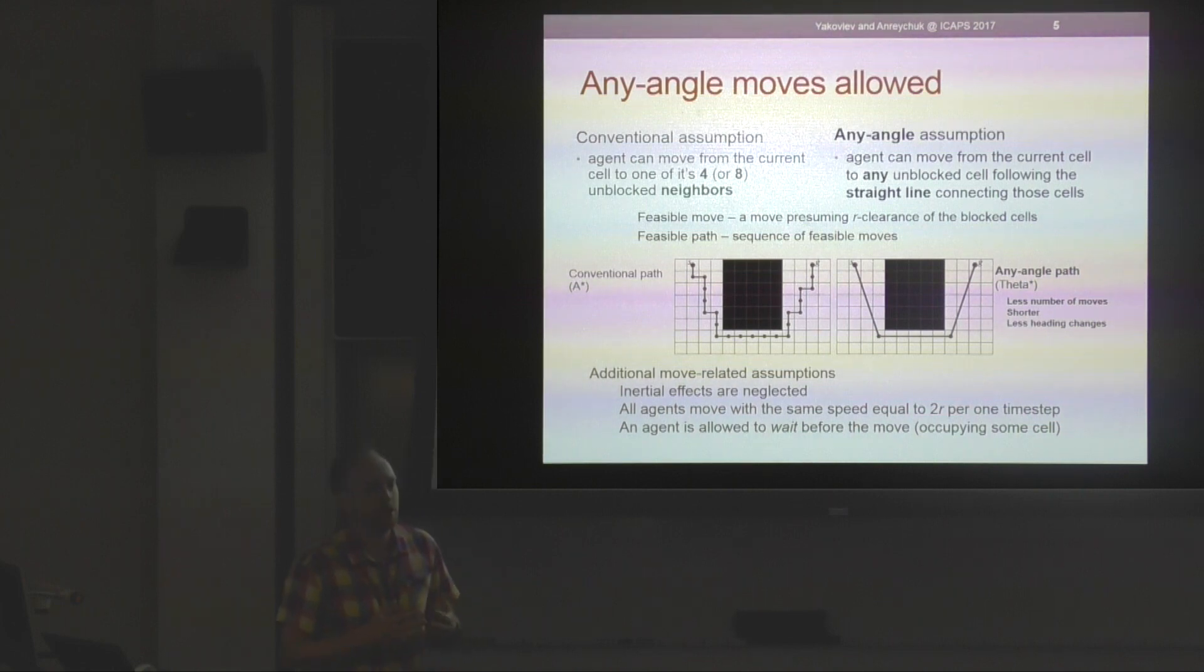Unlike many other ongoing work in grid-based multi-agent pathfinding, we allow our agents to traverse moves in arbitrary directions as long as the move is a straight line segment connecting the centers of distinct unblocked grid cells. This results in what is called any-angle paths, and these paths are known to be shorter than paths comprised of moves when only jumps to cardinal neighborhood cells are allowed, which is a typical assumption.